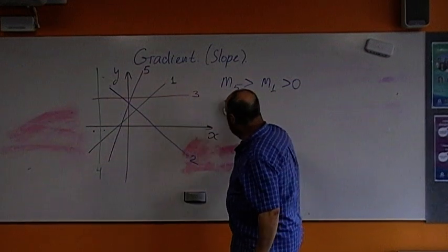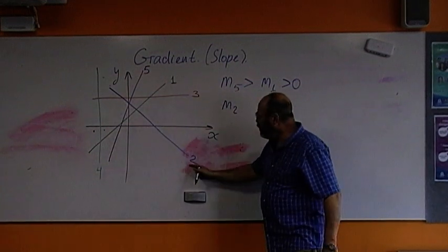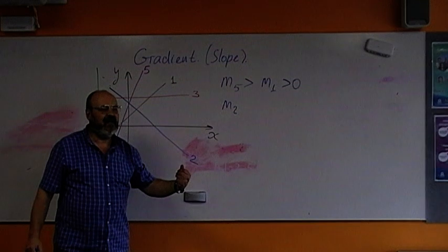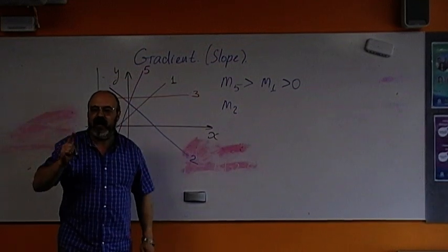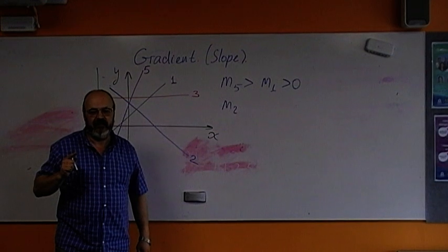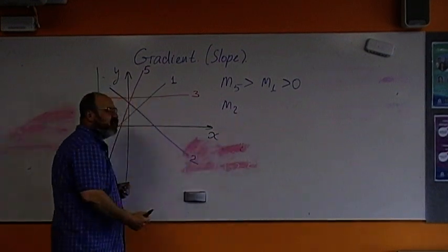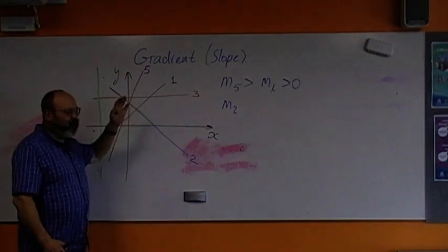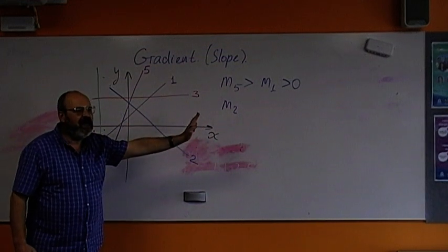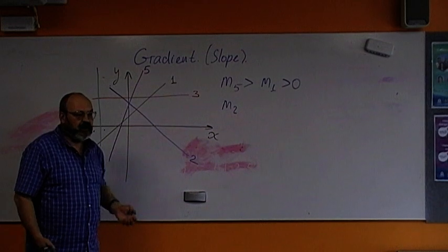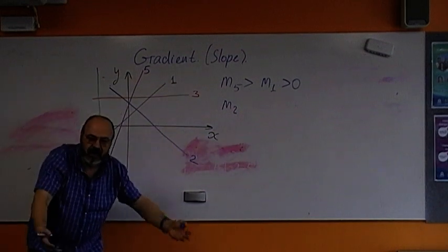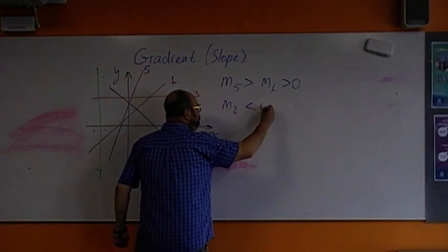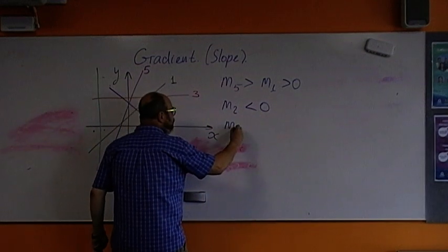What about line number two? Is gradient of the line number two, will it be positive or negative? Negative. Because a rise is negative. It's going down. Remember, when you're doing, make always run positive. Never run from right to left. Always run from left to right. Never run backwards. So, makes always run positive. But, rise can be positive going up. It can be negative going down. Make sense? So, gradient M2 is negative.